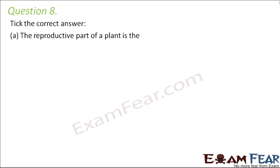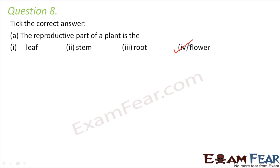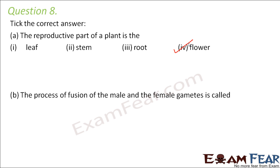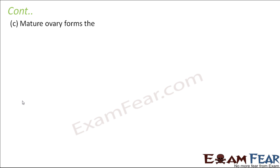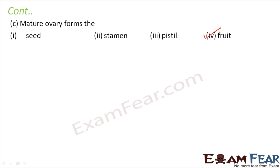Question number 8. The reproductive part of a plant is the flower, of course, because the flower contains the carpel and the stamen, which are the female and male reproductive parts of the plant. The process of fusion of male and female gametes is called fertilization — yes, this is the correct option. After fertilization, the ovary becomes mature and ripens to form the fruit. So the ovary becomes the fruit, and the ovule becomes the seed.